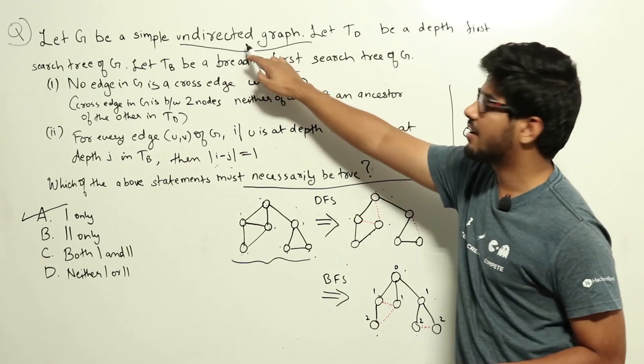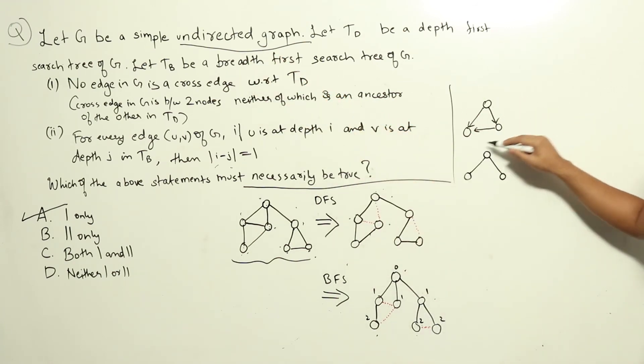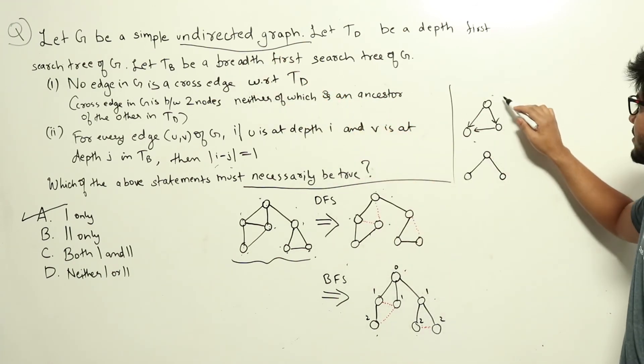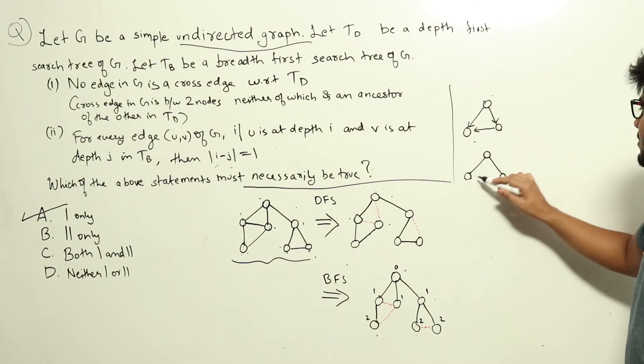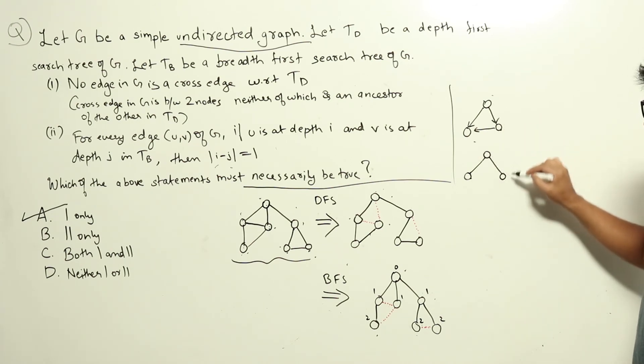They have given that it was an undirected graph. If it was a directed graph like this, and if we were constructing the DFS tree, then from here we would have gone here. But this is a directed edge. We can't go to this node directly from this node. So we would have come back and then added this node later.